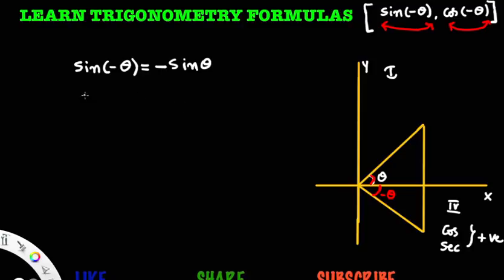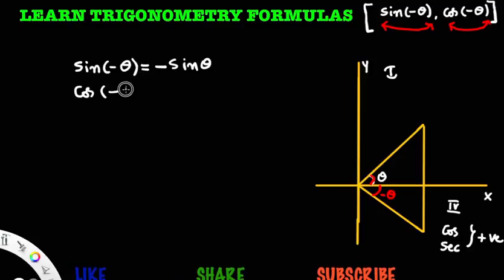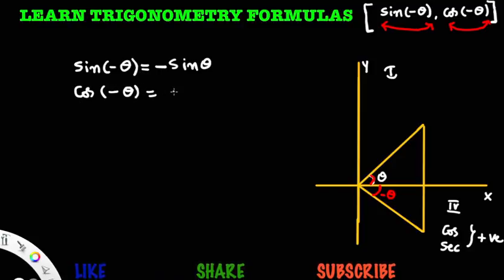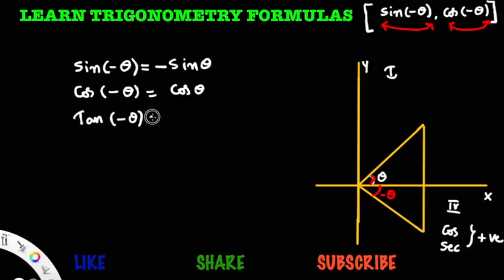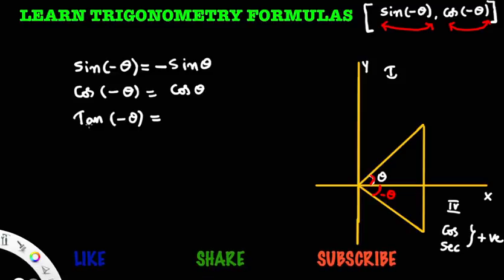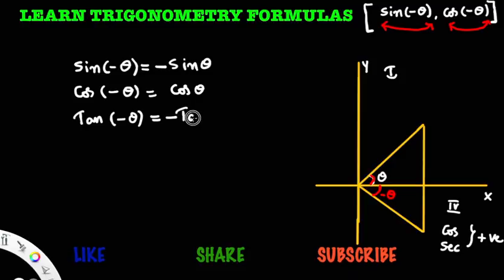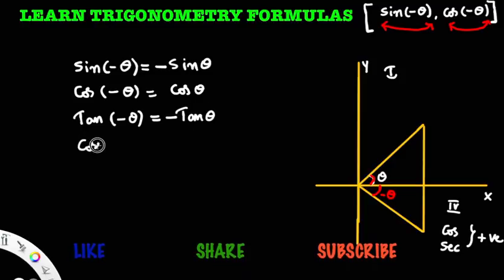Cos of minus theta — minus theta lies in the fourth quadrant. In the fourth quadrant, cos is positive, so cos of minus theta is cos theta. Tan of minus theta — minus theta lies in the fourth quadrant. In the fourth quadrant, tan is negative, so tan of minus theta is minus tan theta.